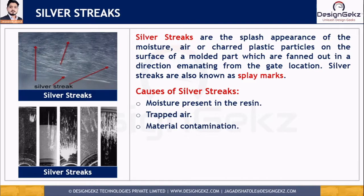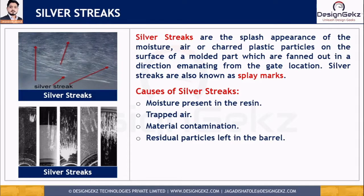Splay marks can also occur due to material contamination. When switching from one material to another, residual particles left in the barrel can contaminate the molten material. If residual particles remain in the barrel for the second batch, that could lead to silver streaks due to material incompatibility.